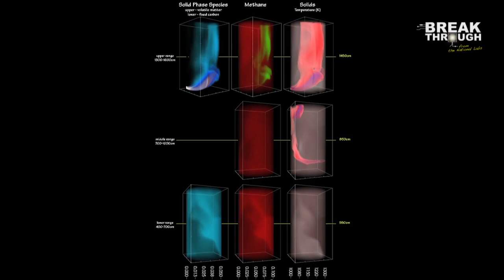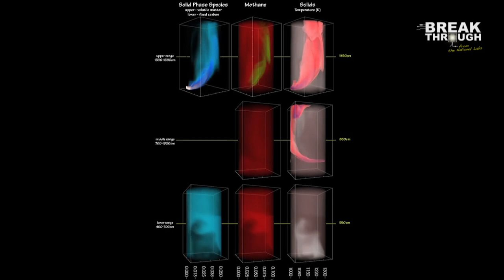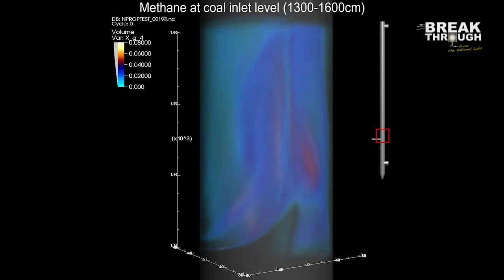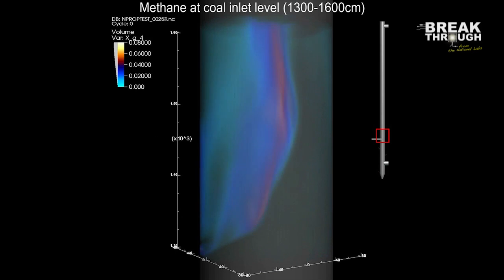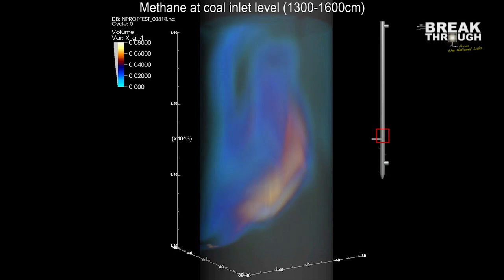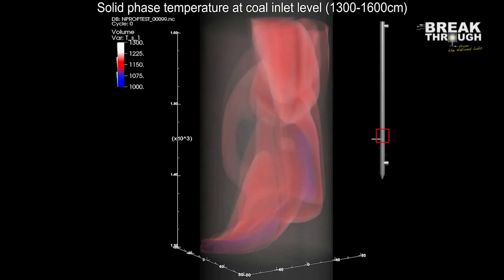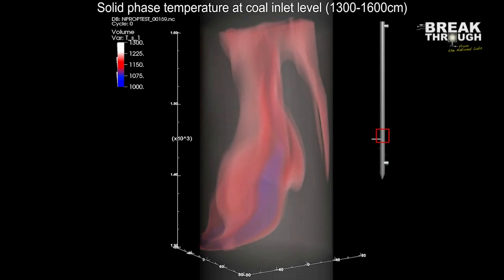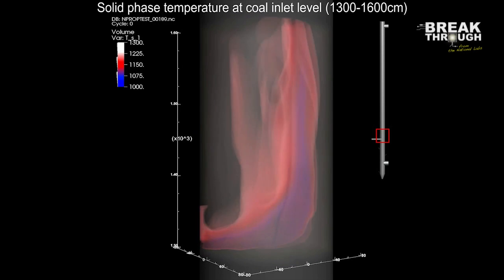The coal particles are heated, and gases trapped in their pores are released. As the particles travel through the gases, they collide with each other and with the walls of the reactor, and chemical reactions occur. It is a complex and chaotic process.